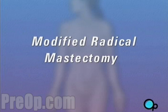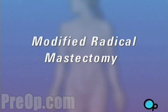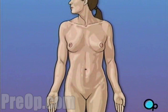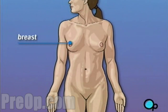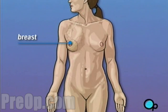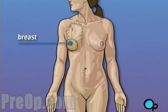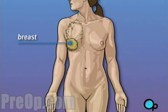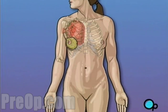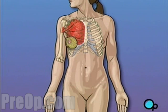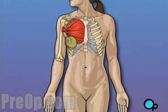Your doctor has recommended that you have a modified radical mastectomy, but what does that actually mean? Traditionally, a radical mastectomy called for the removal of the breast, surrounding tissue, and even the chest muscle below. A modified radical mastectomy is a procedure in which the breast and surrounding tissue are removed while leaving the chest muscle intact.